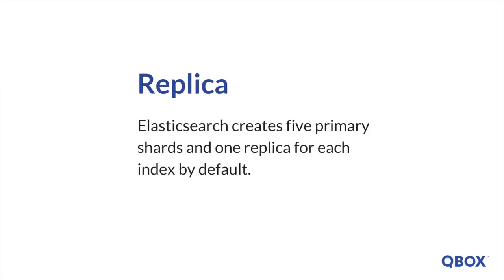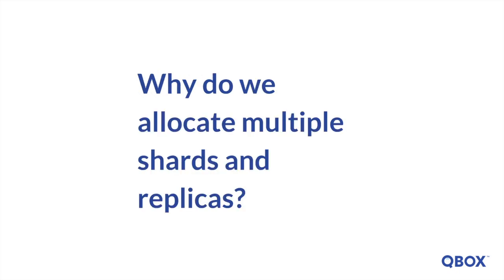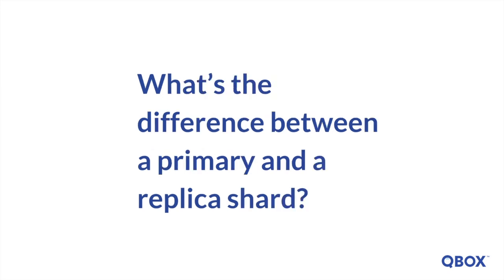Elasticsearch creates five primary shards and one replica for each index by default. Allocating multiple shards and replicas is the essence of the design for distributed search capability. It provides for high availability and quick access in searches against the documents within an index. The main difference between a primary and a replica shard is that only the primary shard can accept indexing requests, but both replica and primary shards can serve querying requests.